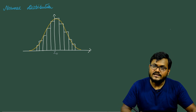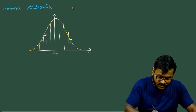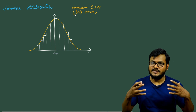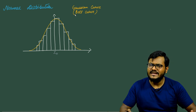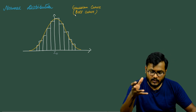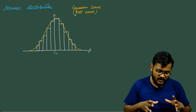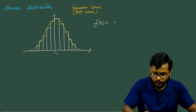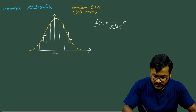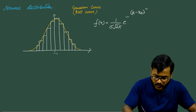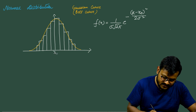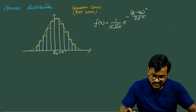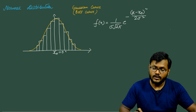This curve is known as a Gaussian curve, or bell curve, or simply a normal distribution. This kind of curve is quite common in many day-to-day physical situations. The mathematical equation that replicates this curve for a large sample size is: f(x) = 1 / (σ √(2π)) · e^(−(x − x₀)² / (2σ²)), where x₀ is the mean or average of all the data points. For simplicity, let's suppose x₀ equals 0. This is the normal distribution or Gaussian curve.